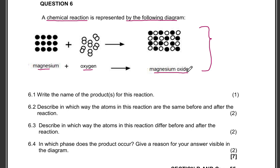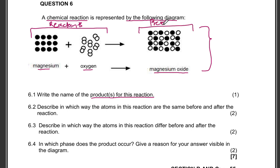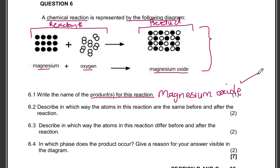They have indicated that we have a reaction between magnesium and oxygen to form magnesium oxide as a product. Write down the name of the product for this particular reaction. Remember, on the left-hand side we have what we call the reactants, and on the right-hand side we have the product. The product in our particular reaction is magnesium oxide — one mark for that.